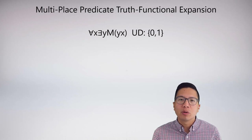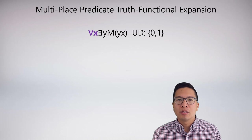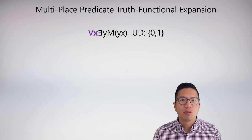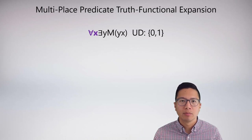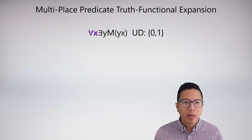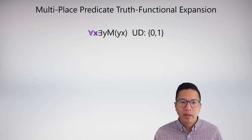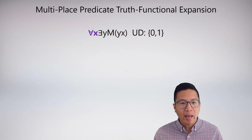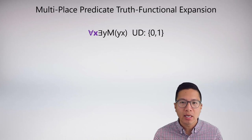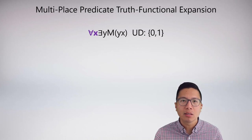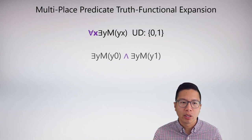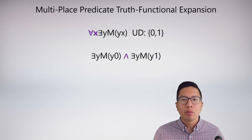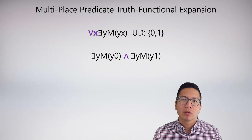I'm going to expand the universal quantifier first. As you saw from my previous lecture video, I always prefer to go from the outside in, so that's why I picked the universal — it's just an arbitrary choice. My universal discourse is 0 and 1. What does it mean for all x there exists a y, M(y,x)? It means this is true for 0 and true for 1, because that's what the universal says. So I expand and replace my universal quantifier with a conjunction, replacing x first with 0 and then with 1.